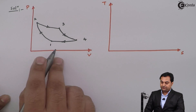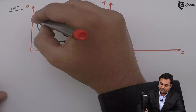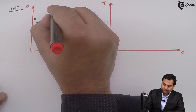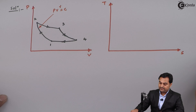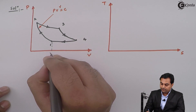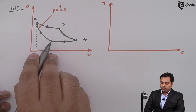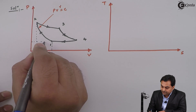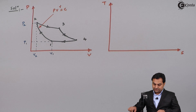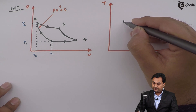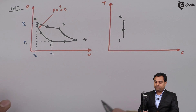Now I can draw the Carnot cycle on the TS diagram as well. The first process, isentropic compression from 1 to 2, is governed by PV^γ = constant, meaning entropy remains constant. On the TS diagram this is represented by a vertical line. At point 1 the volume is greater, and at point 2 the volume is less, so pressure increases from point 1 to point 2.